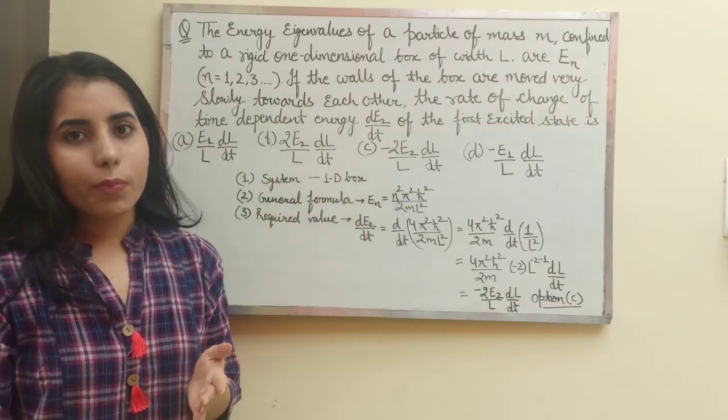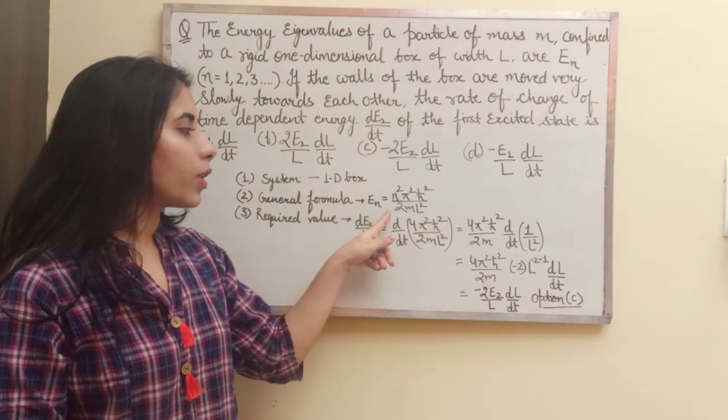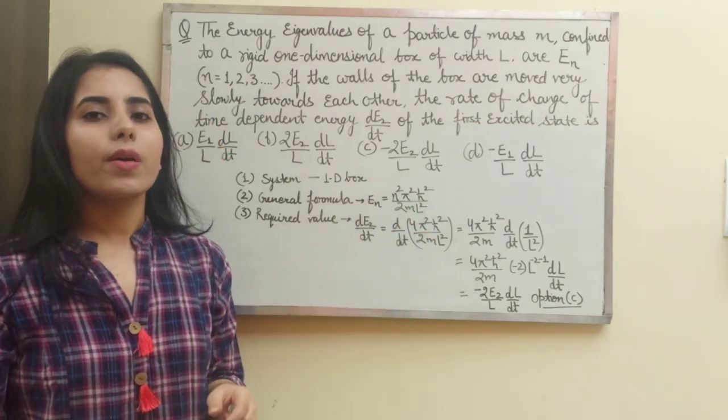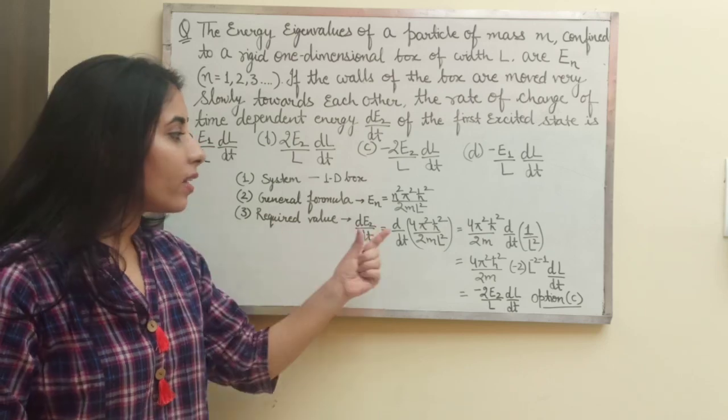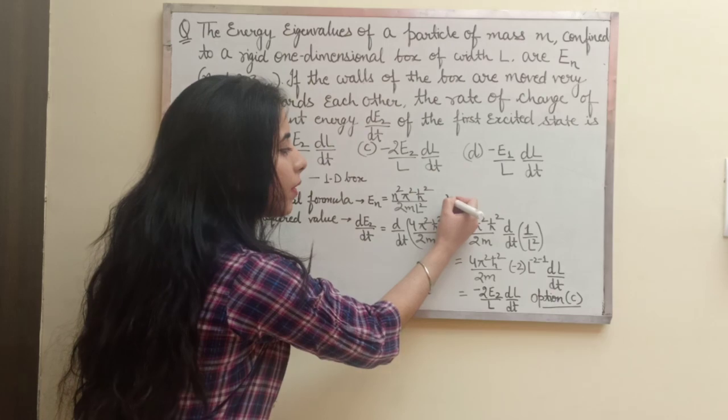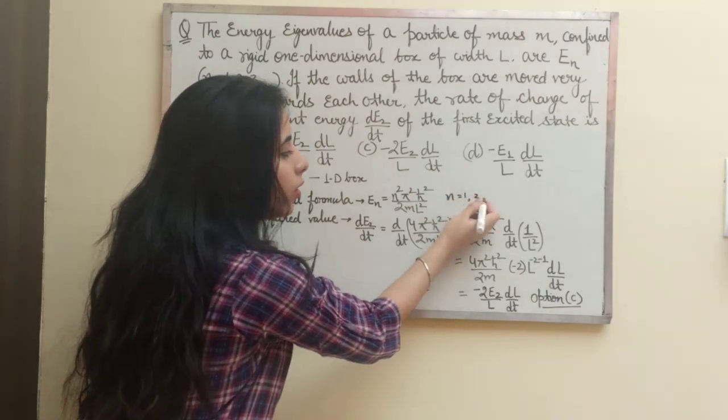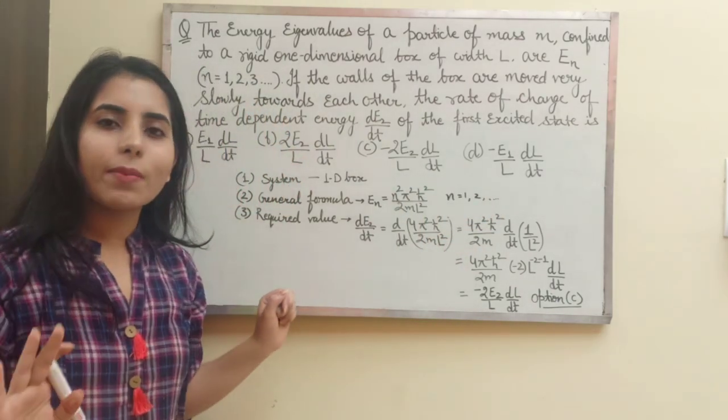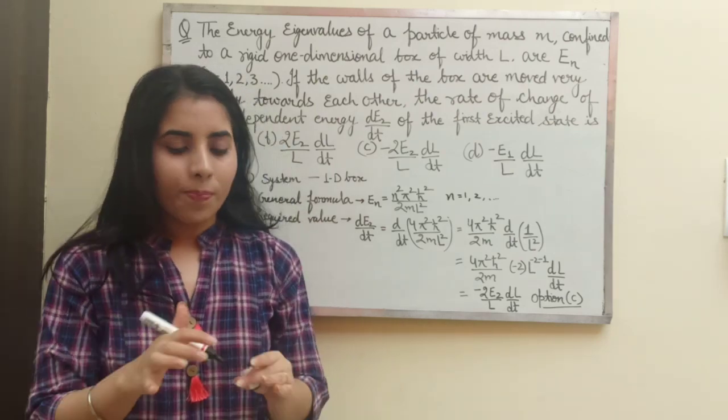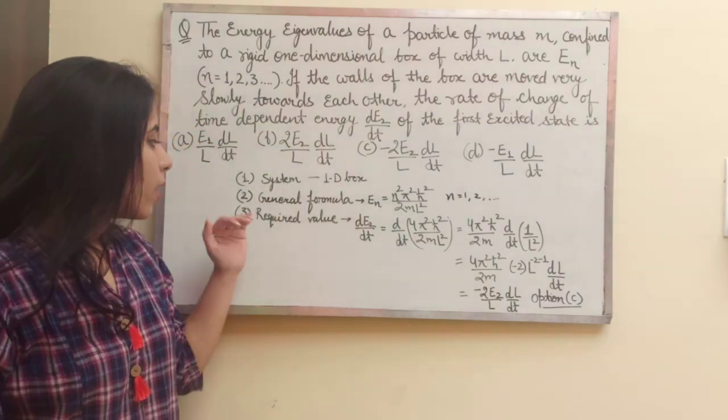So yes, we know for the 1D box the general expression for the energy state is En equals n square pi square h bar square upon 2m L square, where L is the width which is already given as L, and here the possible values of n are 1, 2, 3 and so on. So minimum value of n which is possible is 1, it's not 0.